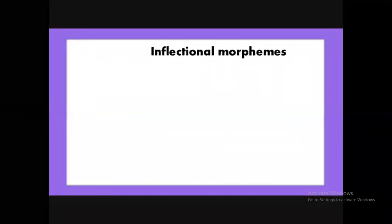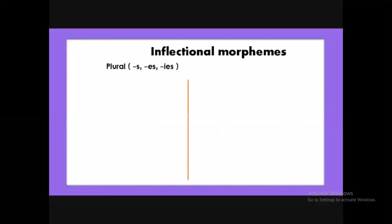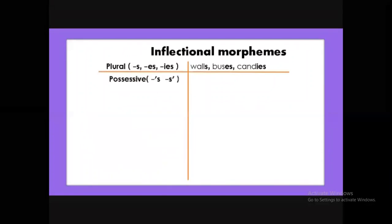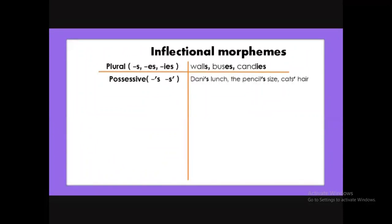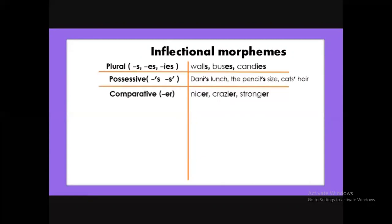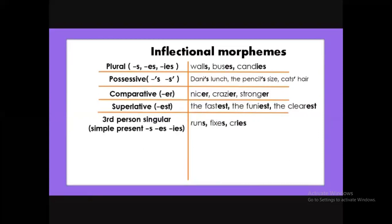Inflectional morphemes are only eight. They are: the plural ending in -s, -es, or -ies (e.g., 'walls,' 'buses,' 'candies'); the possessive apostrophe-s or apostrophe for already-plural words (e.g., 'Danny's lunch,' 'the pencils',' 'cat's hair'); the comparative -er (e.g., 'nicer,' 'crazier,' 'stronger'); the superlative -est (e.g., 'the fastest,' 'the funniest,' 'the clearest'); the third-person singular present tense ending in -s, -es, or -ies (e.g., 'runs,' 'fixes,' 'cries'); and the regular past form -ed (e.g., 'helped,' 'studied,' 'loved').